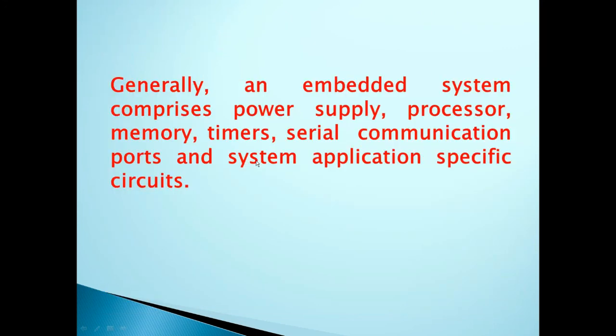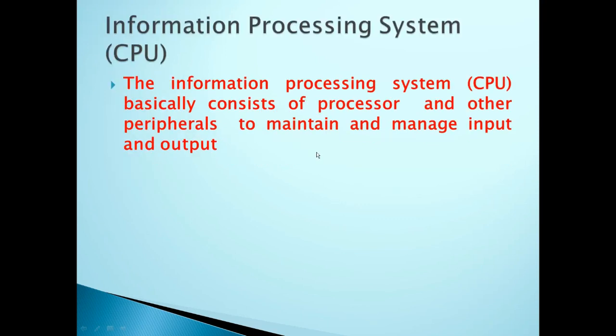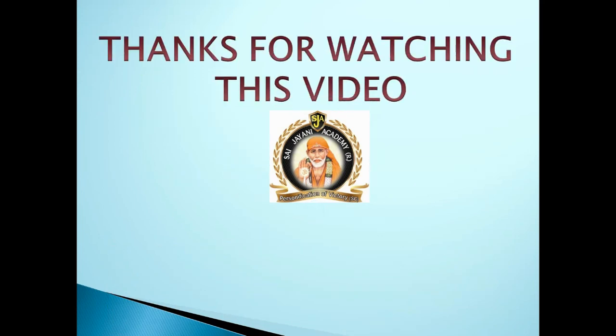Generally, an embedded system comprises a power supply, processor, memory, timer, serial communication ports, and system application-specific circuitry. The information processing system basically consists of a processor and other peripherals to maintain and manage input and output.